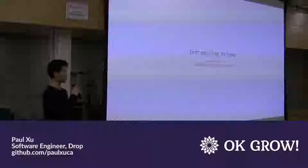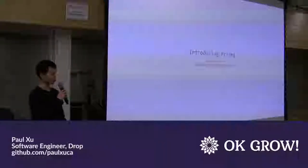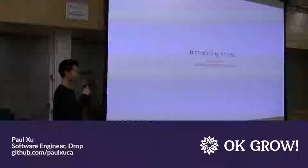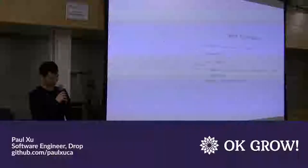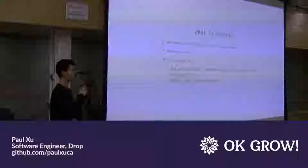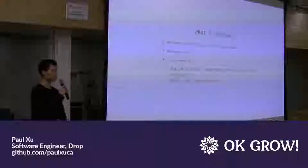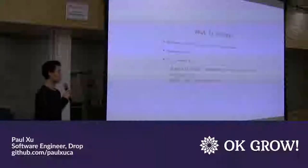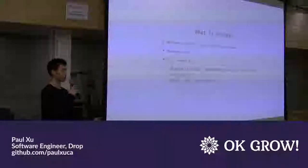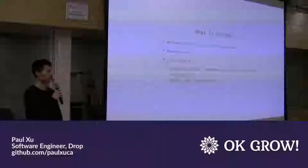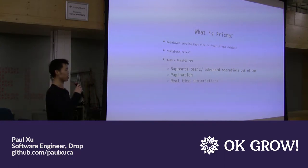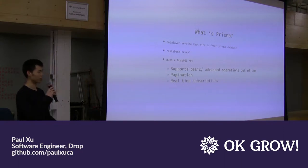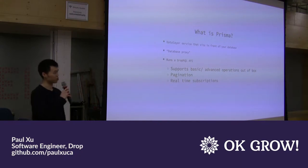Prisma is an open-source framework available on GitHub where you can look at the code and see all the new features. So what is Prisma? Prisma is a database layer that sits in front of your actual database — people call it a database proxy. It takes your database — SQL, Postgres, Mongo, and others coming soon — and runs a GraphQL API on top. It basically generates a schema and allows you to query against it, run mutations, and all the things you'd expect from a GraphQL API.